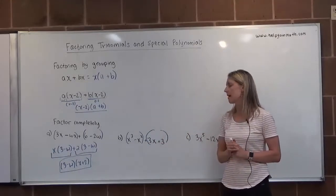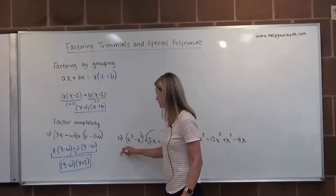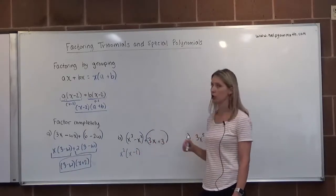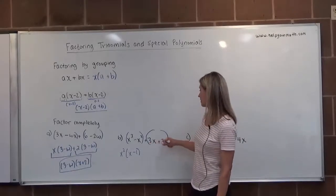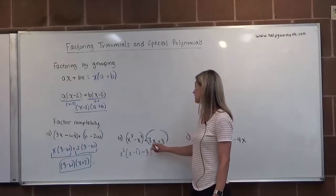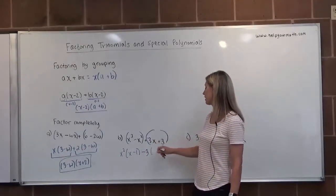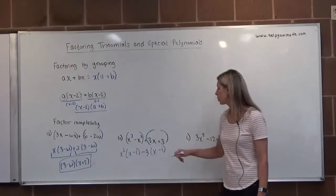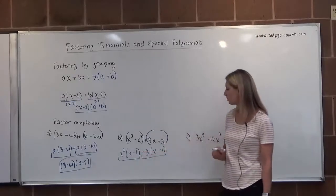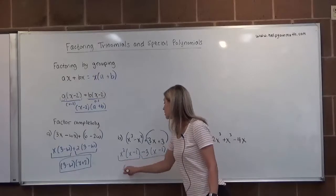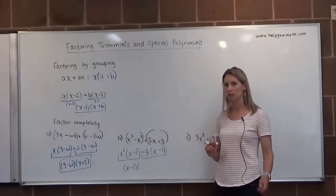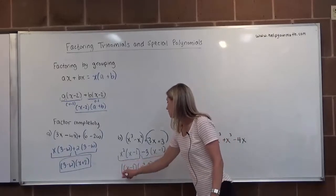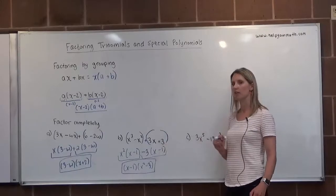In the first grouping, x cubed and x squared have a GCF of x squared. Dividing each by x squared leaves (x minus 1). In the second grouping, because the first term is negative, I factor out a negative, and 3x and 3 share a factor of 3, so I factor out minus 3. Dividing: negative 3x divided by negative 3 is x, and 3 divided by negative 3 is minus 1, giving (x minus 1). Now I have two terms, each with a common factor of (x minus 1). Factoring that out, I'm left with x squared minus 3 in the second parentheses. So the factored form is (x minus 1)(x squared minus 3).